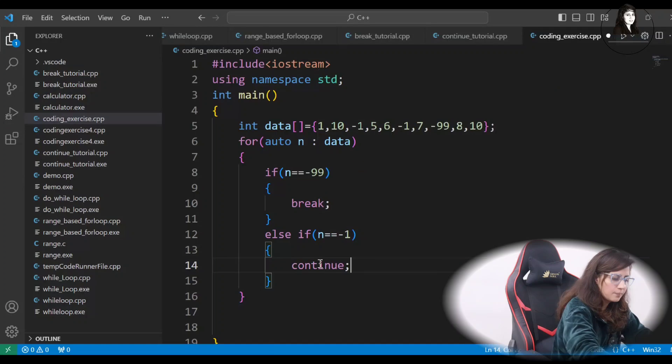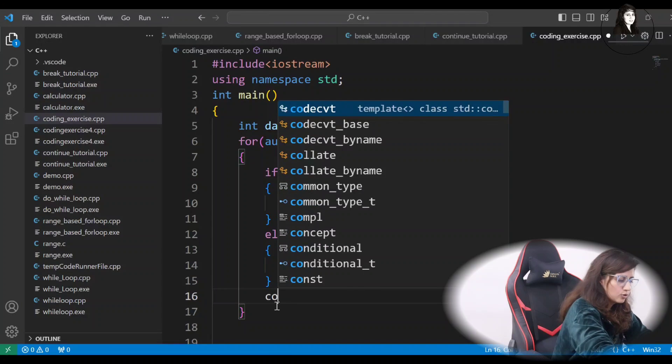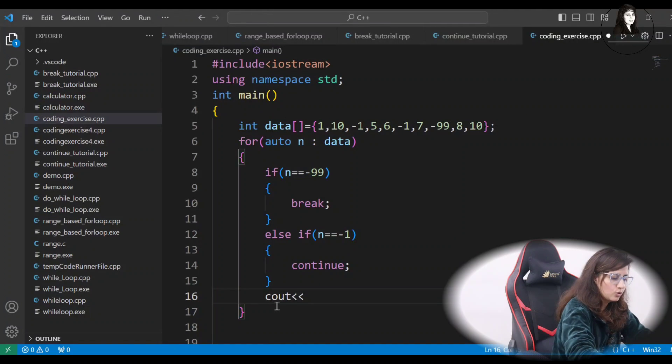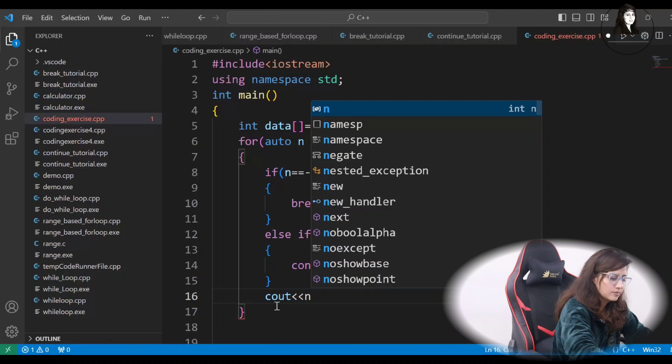We are going to skip something, some condition. And after that, what you want to skip? This printing, processing. Processing means simply, we want to print this N.